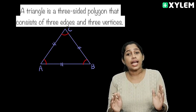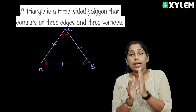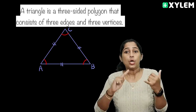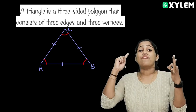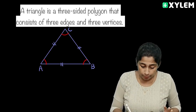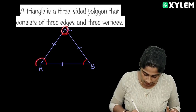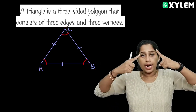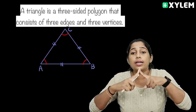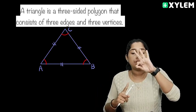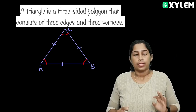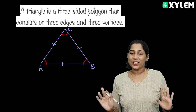What is the triangle? Three sides, three angles, three vertices. These are the vertices: A, B, C. We have three vertices, three sides, three angles.